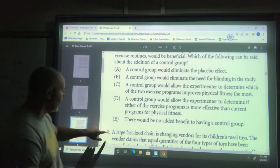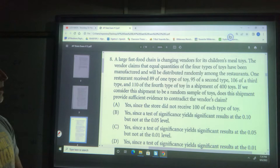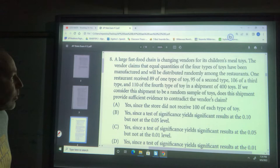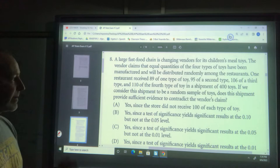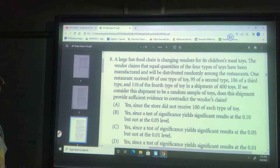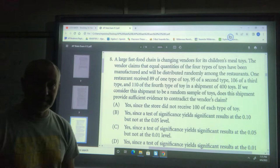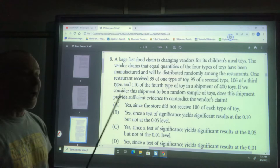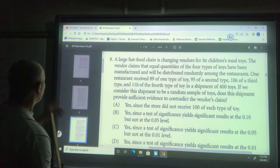Number eight: A restaurant is changing toy vendors. The vendor claims equal quantities of four types of toys have been manufactured and distributed randomly. The restaurant received 89, 95, 106, and 110 out of 400 toys. Does this shipment provide sufficient evidence to contradict the vendor's claim? We expect 100 of each toy. This is a chi-squared goodness of fit test.